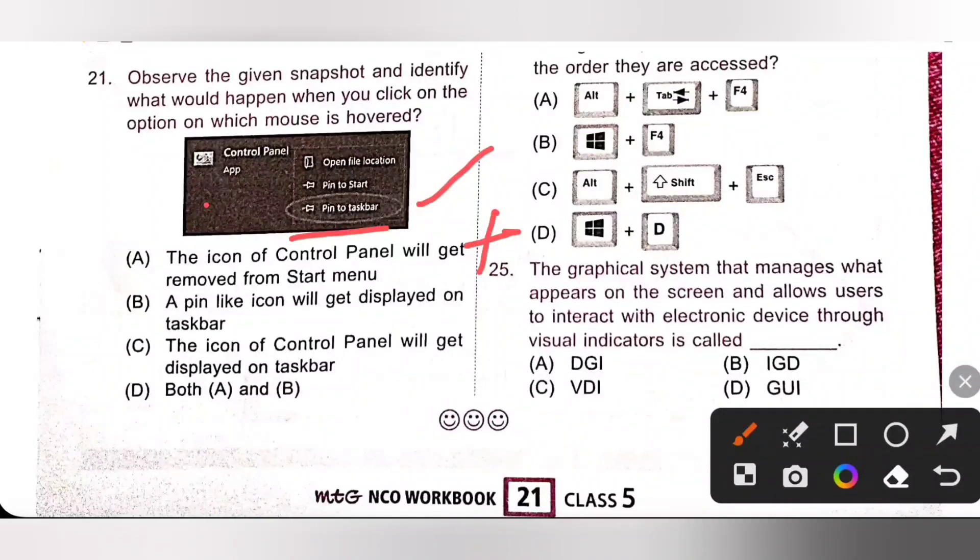Actually, that is pin to taskbar. Control panel, then pin to taskbar. So, option D, a pin like icon will get displayed on the taskbar, no. Option C, the icon of control panel will get displayed on the taskbar. Option C is the correct answer.